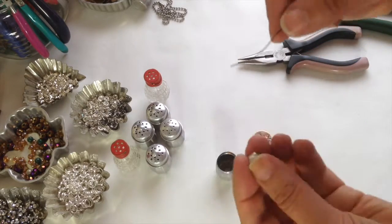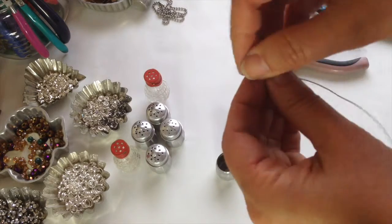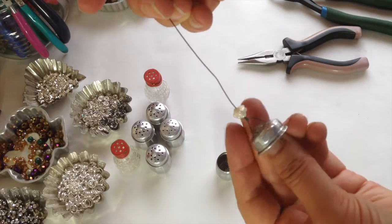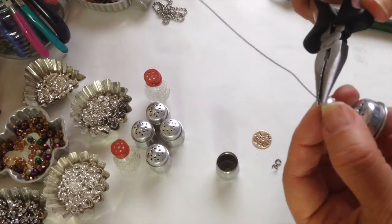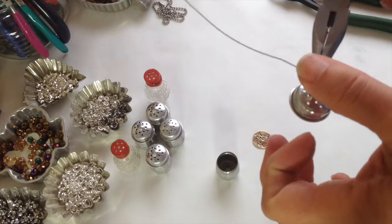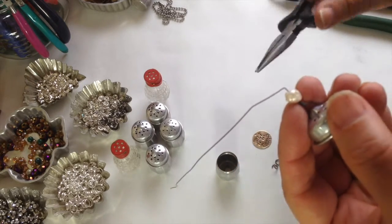And then I string on the freshwater pearl all the way down to look like that. Then take the pliers right above the pearl. Make the pliers fit all the way up against the pearl, and bend the wire over to make a 90 degree angle. Like that.